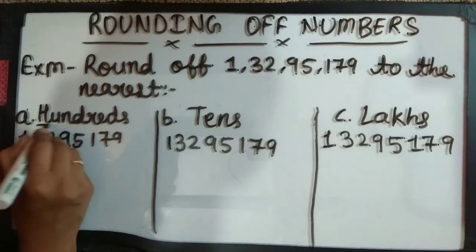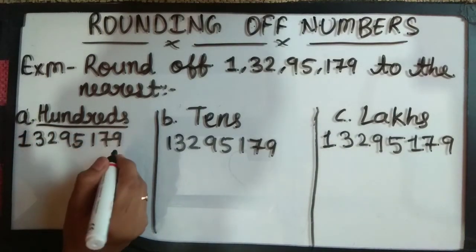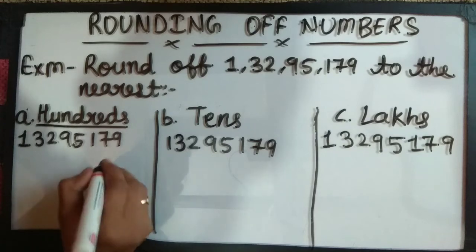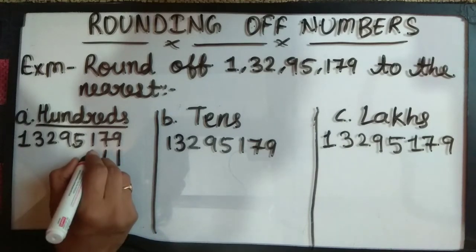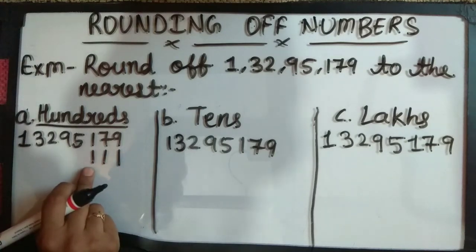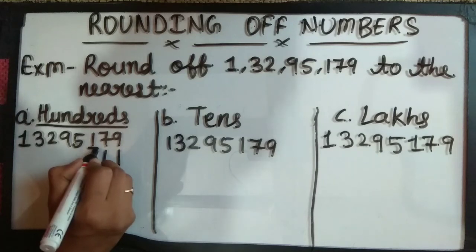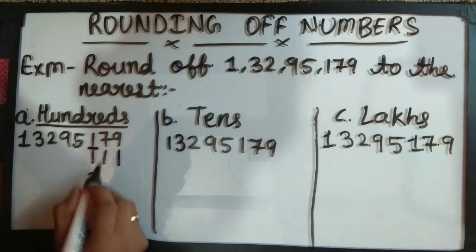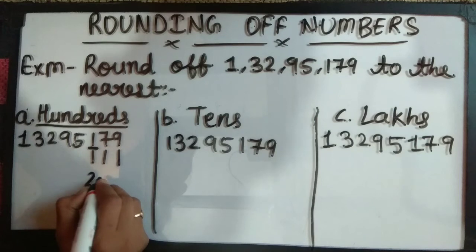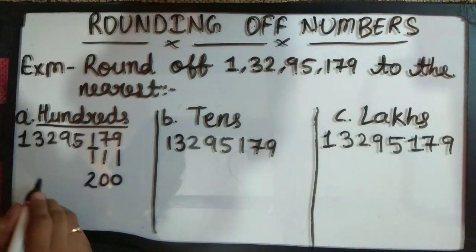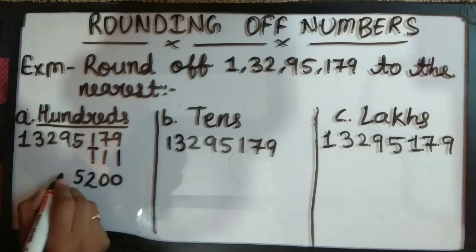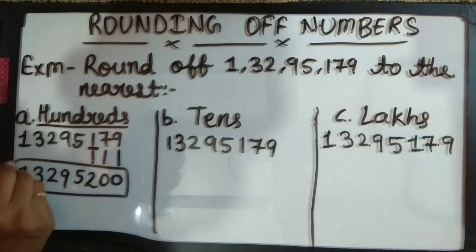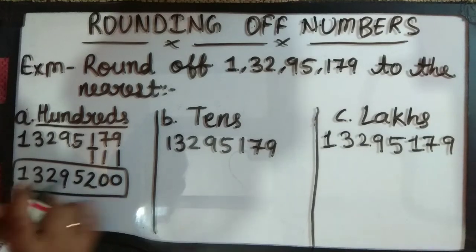We will see what the place value is. The hundreds place value is here — this is ones, tens and hundreds. Hundreds is here. This digit is 1. We will see one plus one equals two, and the right-hand side digits will become zero. The left-hand side digits we will keep as they are: 5, 9, 2, 3, 1. So this round off is to the nearest hundreds.